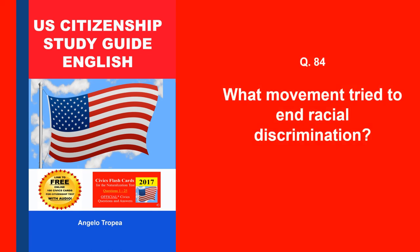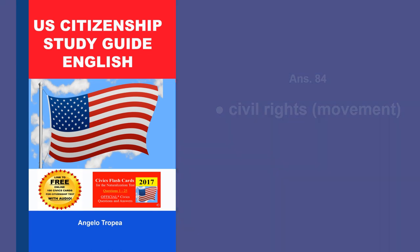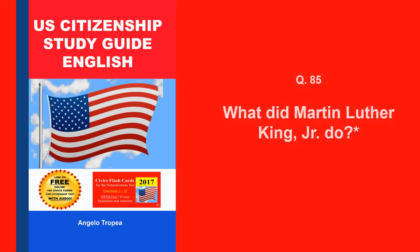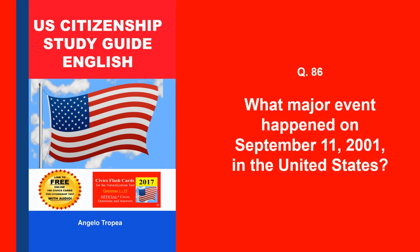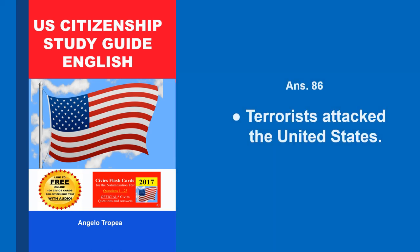What movement tried to end racial discrimination? Civil Rights Movement. What did Martin Luther King Jr. do? Fought for civil rights. Worked for equality for all Americans. What major event happened on September 11, 2001 in the United States? Terrorists attacked the United States.